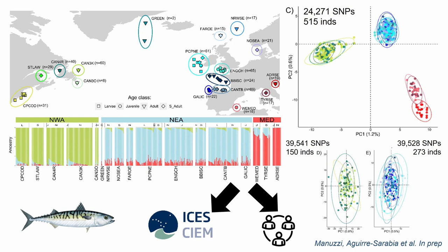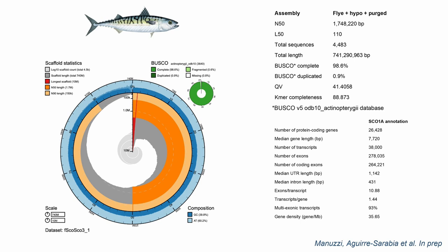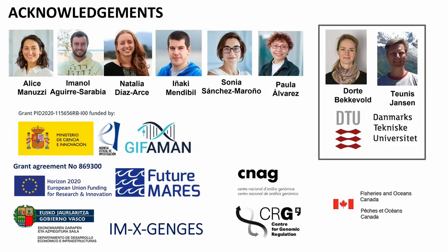We've translated these results for ICES because it's important for management to understand whether spawning components should be considered separately. We're working with collaborators to expand the dataset, as we may be lacking samples from southern Portugal. We've also sequenced the Atlantic mackerel genome, which is available upon request — the paper is about to be submitted, but anyone working on mackerel is welcome to the genome right away.